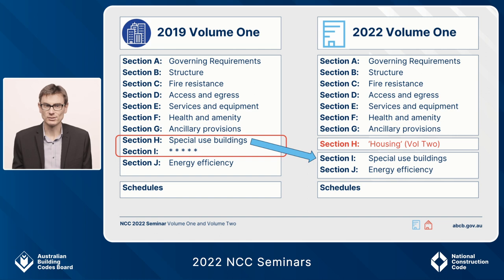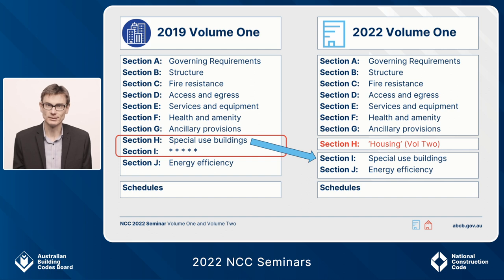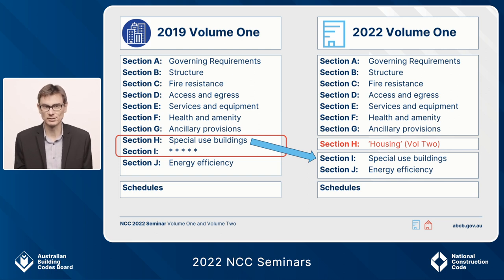Compare this to NCC 2022 in the new structure. At this level, not much has changed. The only real change is that Special Use Buildings has moved from Section H in the 2019 structure into Section I in the 2022 structure. What this has done is allowed Section H to be designated for housing — that's Volume 2. And as before, the schedules come after the technical provisions found from B through to J. So there's not much change really at this high level.